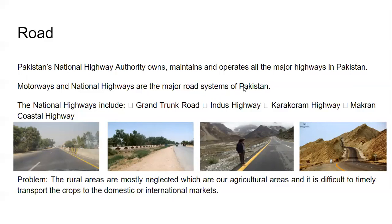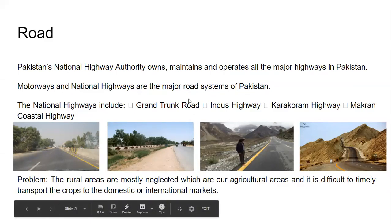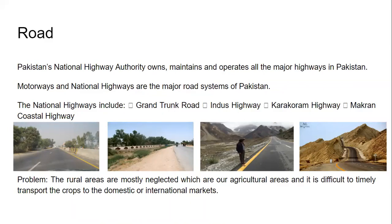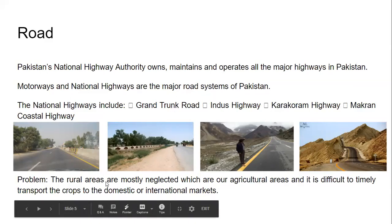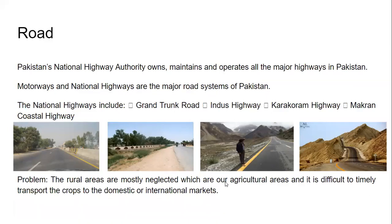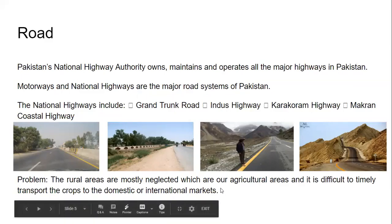Motorways and national highways are the major road systems of Pakistan. Whenever you travel from Lahore to Murree or Islamabad, you pass through national highways such as Grand Trunk Road, which is called GT Road. National highways include GT Road, the Indus Highway, the Karakoram Highway, and the Makran Coastal Highway — you should remember all four major highways. The problem is that while we have these highways, roads connecting rural areas are insufficient. We have roads in cities but not enough in rural areas, which are the places from where raw materials for many industries come. Without a good rural transport system, it becomes very difficult to transport crops from rural areas to industries for domestic and international markets.